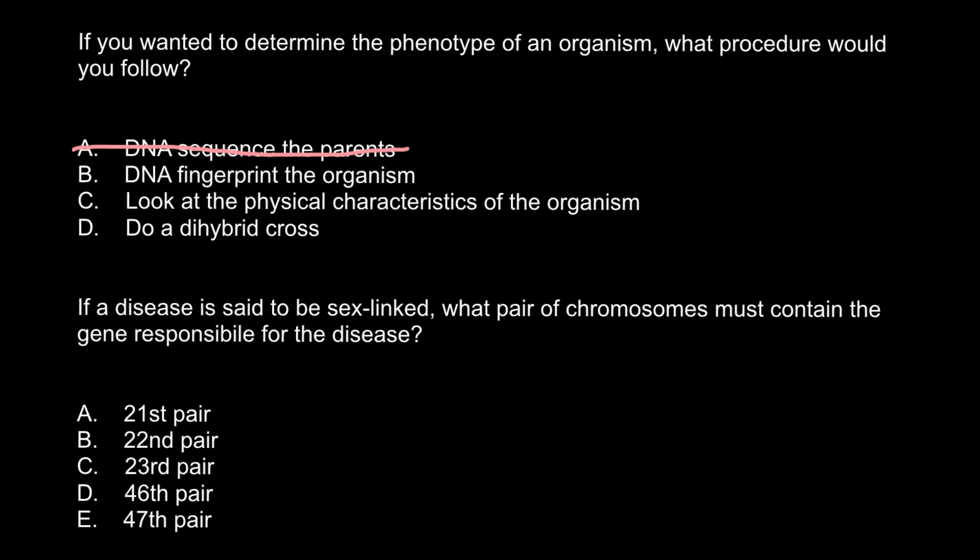Answer B: DNA fingerprint of the organism. Just like normal fingerprints that represent a very small surface of our bodies and can tell one person from another — everyone has unique fingerprints — a DNA fingerprint also refers to very small DNA fragments. By analyzing those small fragments, we can also tell one person from another, because every person has a unique DNA fingerprint, except in cases of identical twins. So we can cross out answer B.